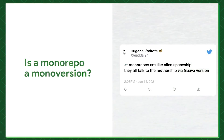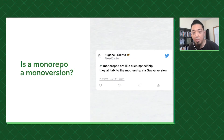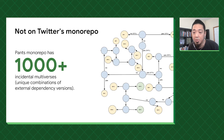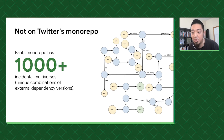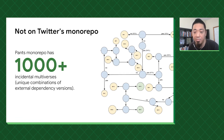I'd like to start with this one question: is monorepo a monoversion? And if so, are we all connected? Well, it's certainly not the case with Twitter. We have around 1,000-plus incidental multiverses. Here we define multiverse to be a unique combination of external dependency versions. Similar to traditional build tools like Maven or SBT, Pants resolves these external dependencies at the top-level targets, like test and Scala binary targets. So essentially, individual targets could form their own multiversion.